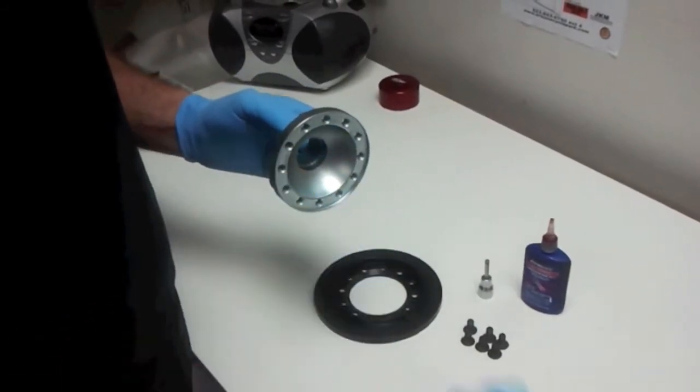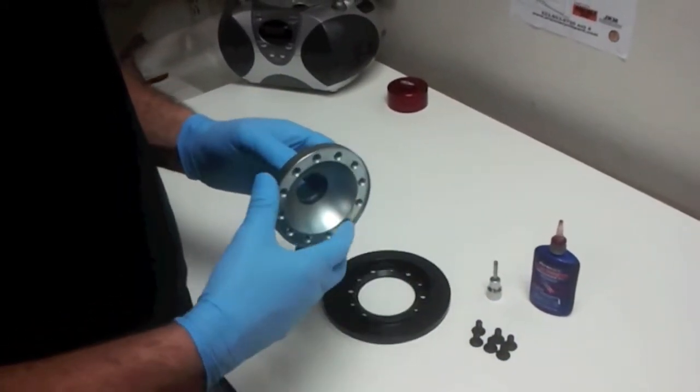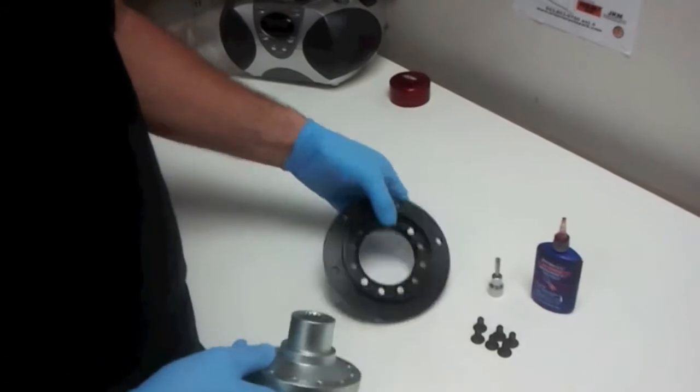If you're running outboard brakes, you would leave it just like this. However, if you want to run our inboard brakes, we make this Aluminum Rotor Hub.